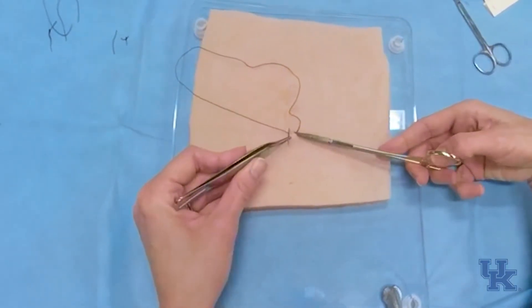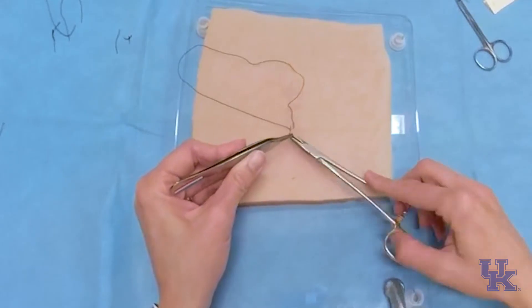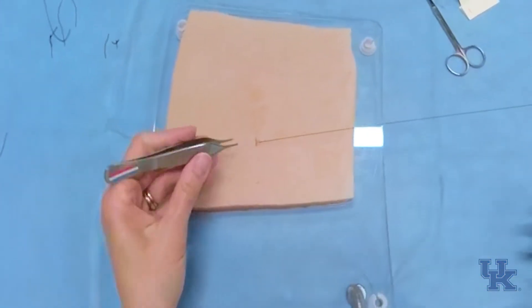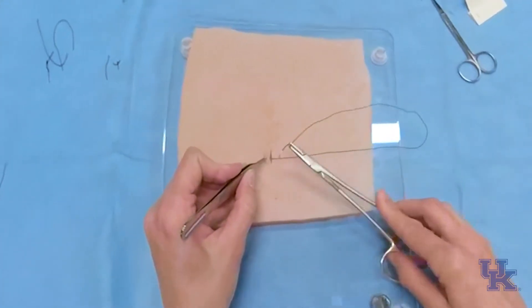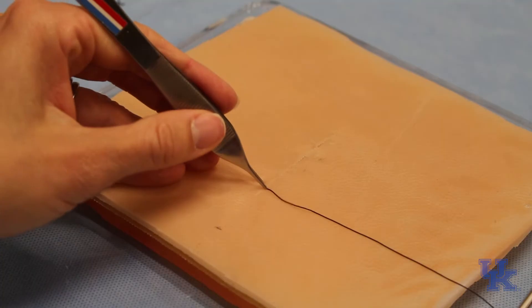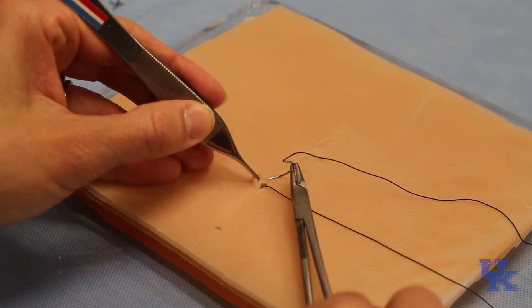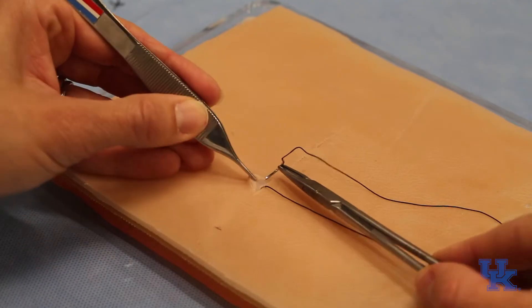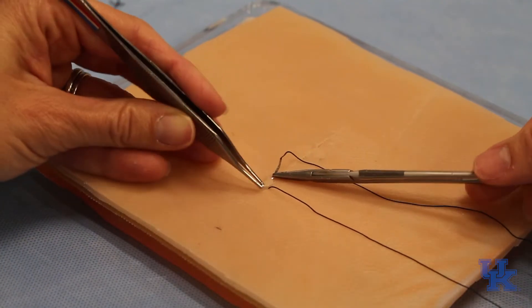As we approach the end, you're going to start thinking about when you need to tie your knot. So we still have a bit of incision on this side. So I think I have the ability to throw one more stitch on this side. I'm going to try to do a little bit of a 90 degree. Rotate out of the skin edge.